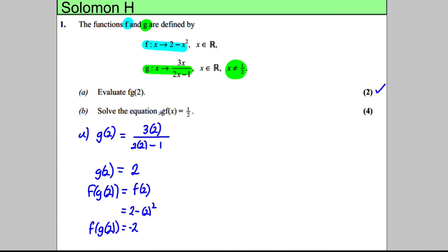It says solve the equation g of f of x equals a half. We've got a composite function. I'm going to work down the page. g of f of x—we're going to put f of x into the function g, so we're going to put this into the function g.